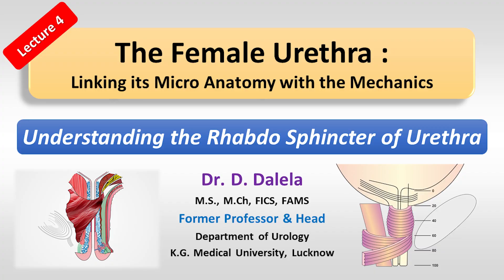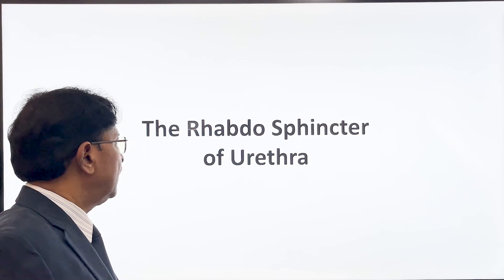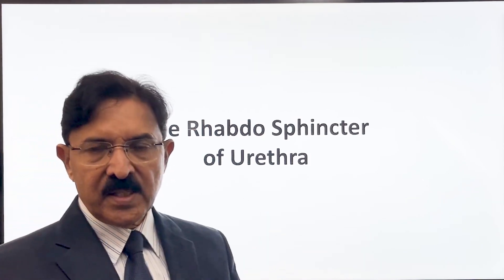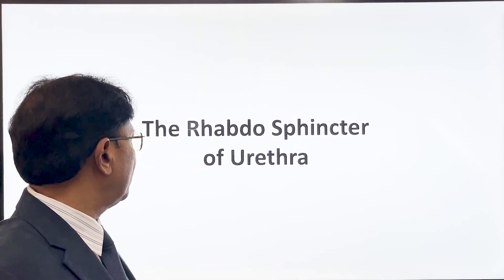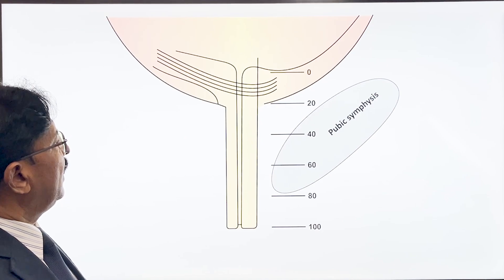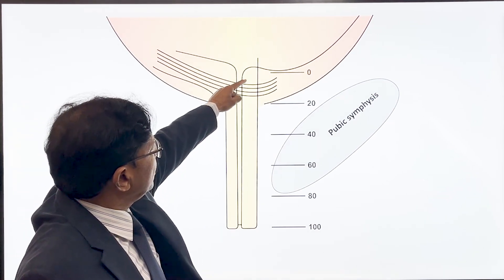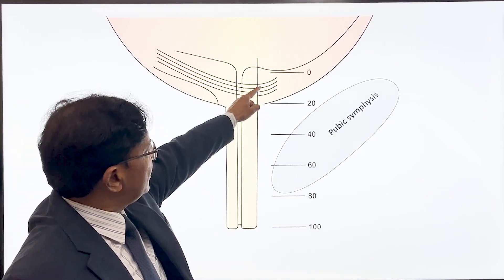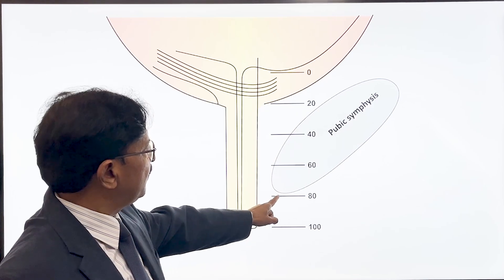Hello friends, in continuation to our series of lectures on linking the micro anatomy of female urethra with its mechanics, let us talk about today the rhabdosphincter of urethra. The urethra is divided into five parts, using percentile divisions.